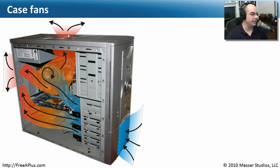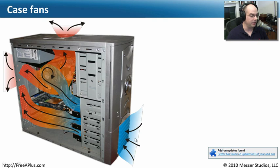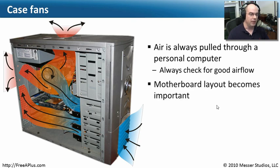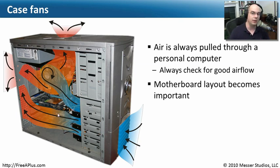But if at any point this ecosystem of airflow begins breaking down — if you've got a fan that's stopping, or the air intake coming into your computer is causing a problem — that's another issue. You want to be sure you always have good airflow. The motherboard layout also becomes pretty important. Where you put components is something you should consider, because you want the airflow to go by those components and cool them down very efficiently.